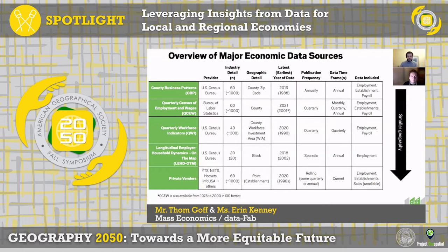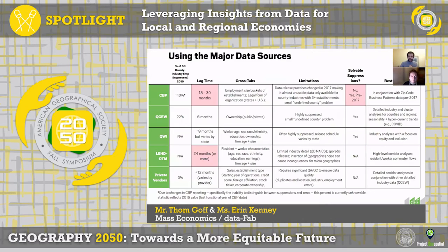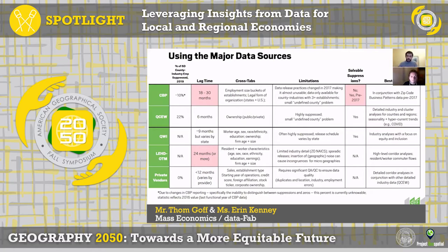But there are some challenges with private vendor data. Moving on to how we actually use these data sources: the first two — which are really the core of economic analyses — you can see that CBP has a couple more cross-tabs than QCW, but the lag hurts. It can be one and a half to about two and a half years behind the present day. Compare that to the QCW dataset where you're only six months back, which is near real time.